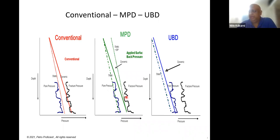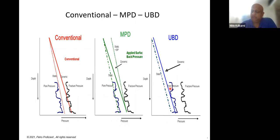On the right side, in underbalanced drilling, your static as well as dynamic pressure is lower than your pore pressure. You are always getting an influx from the well, and you have equipment at surface to receive, separate, and distribute the formation fluids. In UBD you may get production while drilling — the production could be oil or gas, along with drilling mud, nitrogen, or aerated mud — all of which must be handled at surface in a fairly complex process.